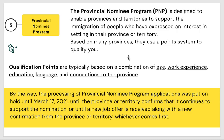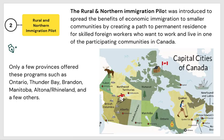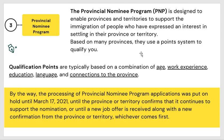Let's move to the Provincial Nominee Program (PNP). This immigration program is designed to enable provinces to support the immigration of people who have interest in settling in the community. Based on many provinces, they use a point system. The qualification points are based on a combination of your age, work experience, education, language, and connection to the province.